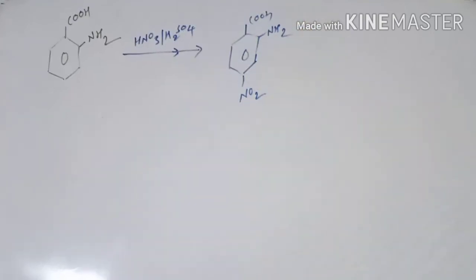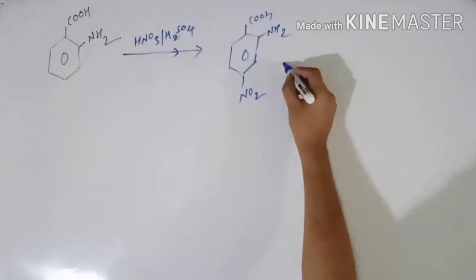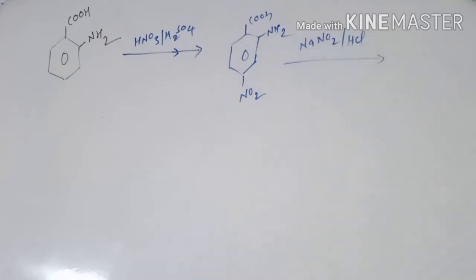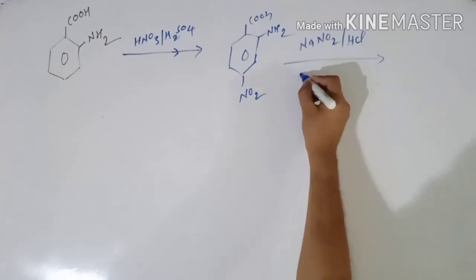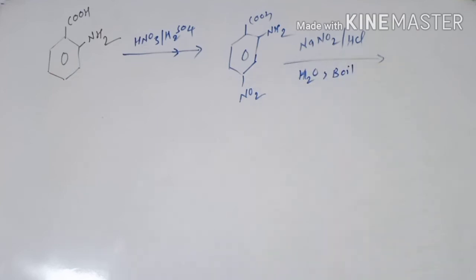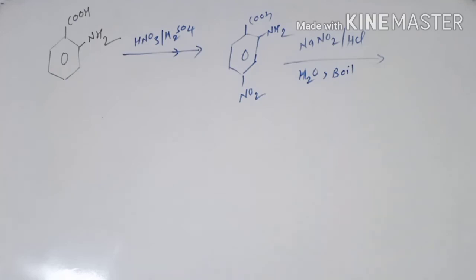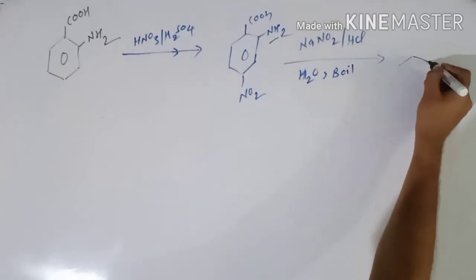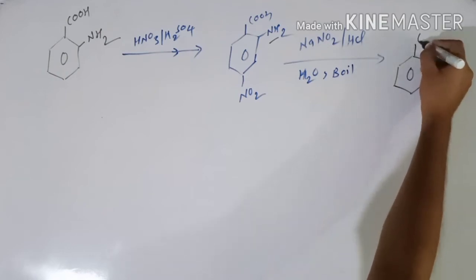Now we know one reaction in which we can convert this amino group to an alcohol group directly by diazotization. In the next step, we will do diazotization in the presence of NaNO2 and HCl, and after that we will do hydrolysis in order to remove the diazonium group with boiling. What will happen is this amine group gets converted to a hydroxyl group and the nitro group remains present at the para position.